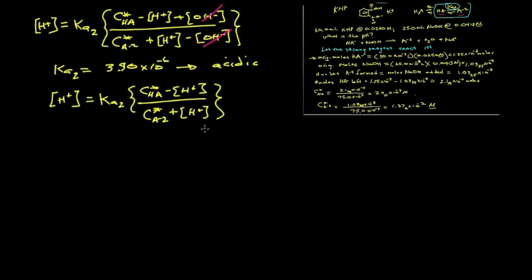We could rearrange and solve this as a quadratic equation, but let's think a moment. We might save ourselves arithmetic. If hydrogen ion is around 10 to the minus 6 and our analytical concentrations are around 10 to the minus 3 and 10 to the minus 2, we might assume the hydrogen ion concentration is negligible compared to CHA star or the analytical concentration of the conjugate base. Then we have a very simple arithmetic problem.